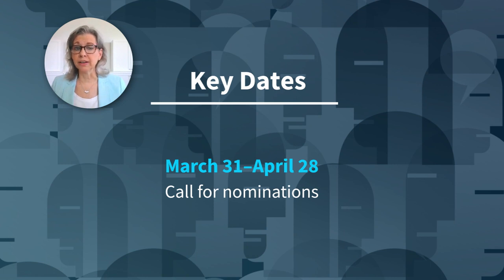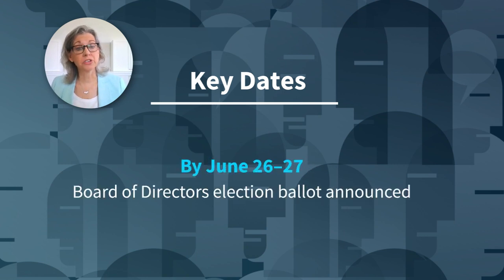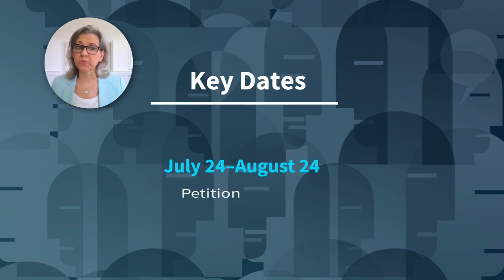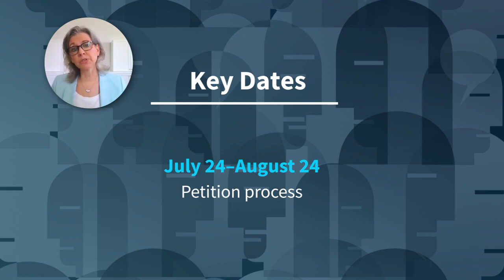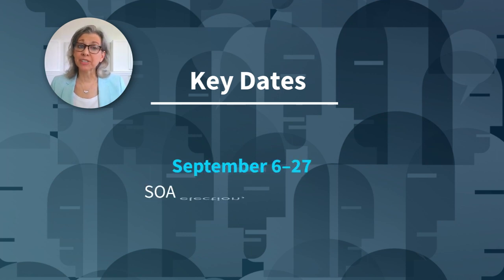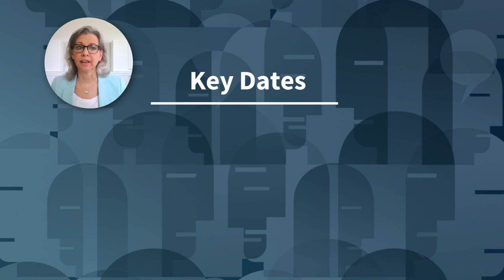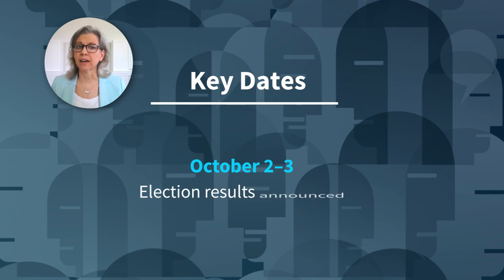After the applications are collected, our nominating committee will review them and select the best of the applications to be on the ballot itself. Starting June 26th, the ballot will be announced to the membership, and then on July 24th through August 24th, the petition process will be open so that members who weren't selected to be on the ballot have the opportunity to join the ballot by the petition process. Beginning September 6th through the 27th will be the time that the membership can vote — it's the election process for the board and the president-elect. And then around October 2nd, election results will be available.